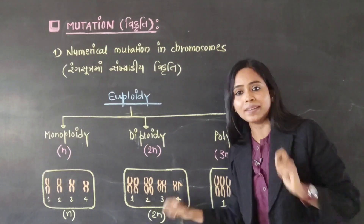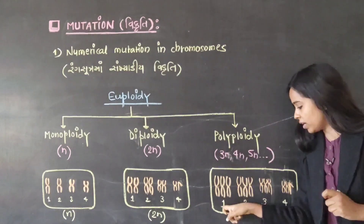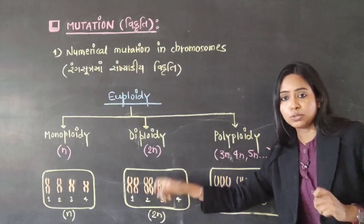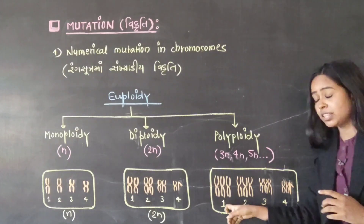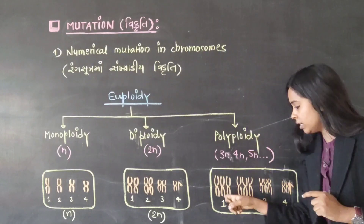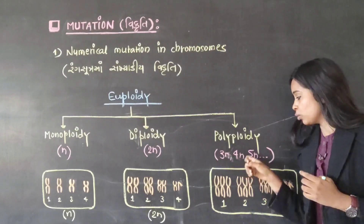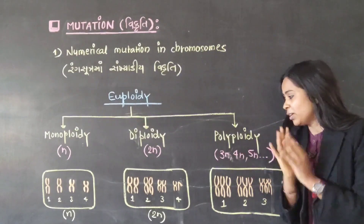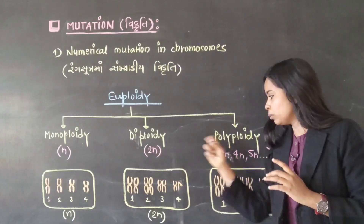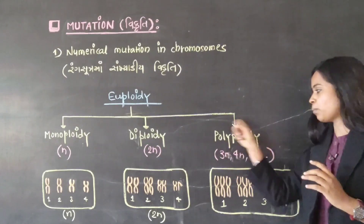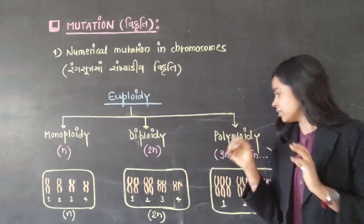The Diploid condition is called the 2N condition. In the next case, if we find three chromosomes in every set, that condition is called Triploidy. It means it could be Tetraploidy also, or Pentaploidy also. But when it goes beyond the Diploid category, from 2N to 3N, then you can call it Polyploidy. After 3N, 4N, 5N, 6N — you can call that condition Polyploidy.